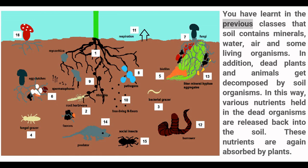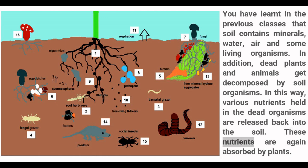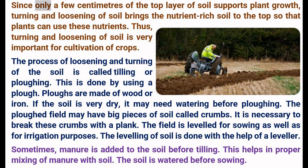But why does the soil need to be turned and loosened? Soil contains minerals, water, air and some living organisms. Dead plants and animals get decomposed by soil organisms, and various nutrients held in them are released back into the soil. These nutrients are again absorbed by plants. Since only a few centimeters of the top layer of soil supports plant growth, turning and loosening of soil brings nutrient-rich soil to the top so that plants can use these nutrients.